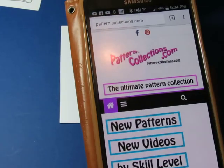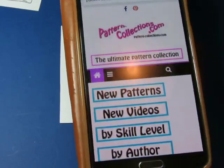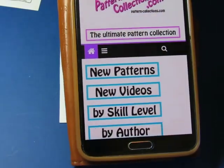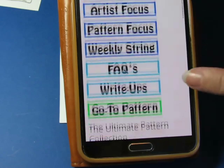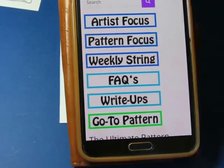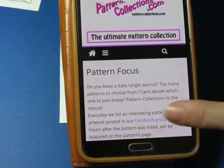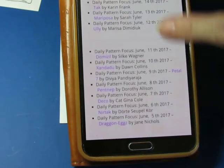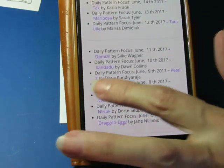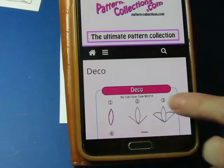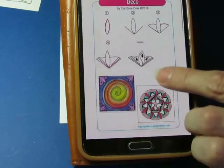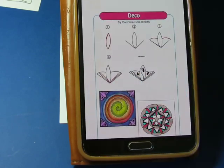Hi everybody, it's me, I'm back. Pattern-Collections.com is where you find the daily pattern. Sorry about the glare. Scroll down to pattern focus, scroll down to today's tangle which is going to be this one. This one is called Deco by Kat Gina Cole.